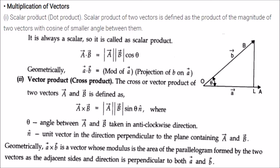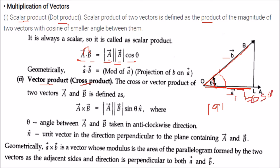Multiplication of vectors can be a scalar product (dot product) or a vector product (cross product). The scalar product of two vectors is the product of their magnitudes and the cosine of the smaller angle between them: A·B = AB cosθ. This equals the magnitude of A times the projection of B onto A, which is B cosθ. The scalar product always yields a scalar value.